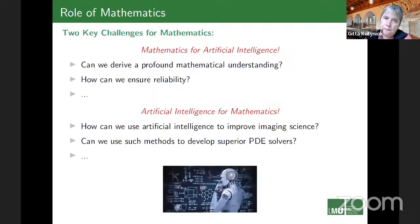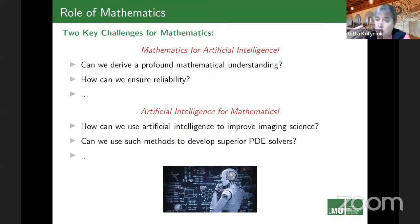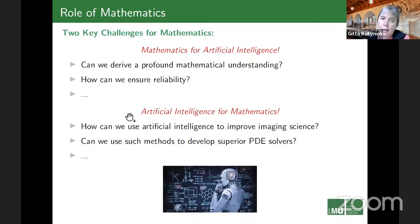What is the role of mathematics in all this? From my perspective, there are two key challenges. One is mathematics for artificial intelligence — asking questions like: can we derive a profound mathematical understanding, and can we ensure reliability? And then artificial intelligence for mathematics, meaning for mathematical problem settings, in particular scientific computing: can we use these new methods to improve solvers in imaging sciences, inverse problems, and partial differential equations?